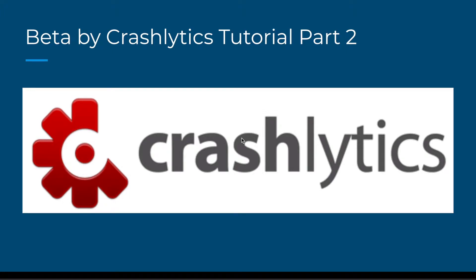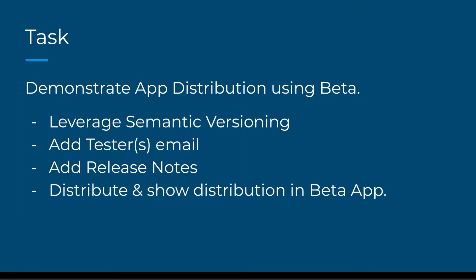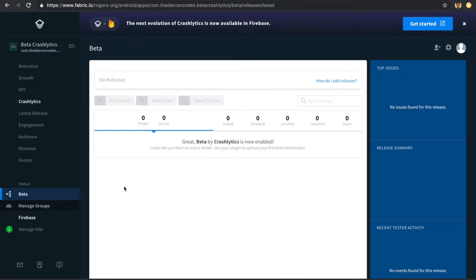Hello everyone, welcome to Beta by Crashlytics part 2 of the tutorial. In this tutorial we have a task ahead of us: to demonstrate app distribution using Beta. We're going to leverage semantic versioning to tell the difference between different software version builds, add tester emails, add release notes, and finally distribute and show our app distribution inside of the Beta application. Let's get started.